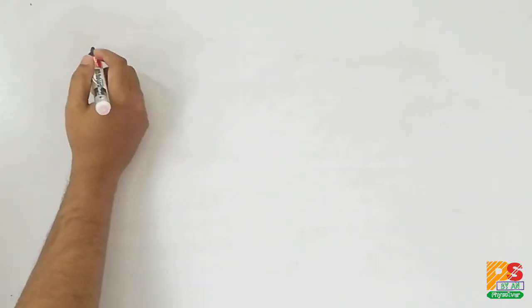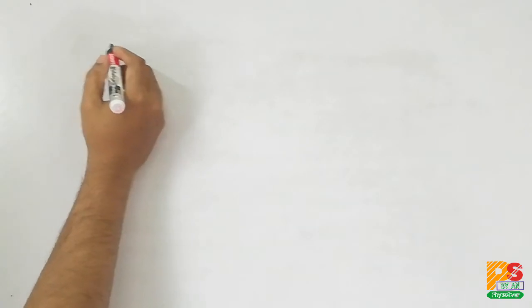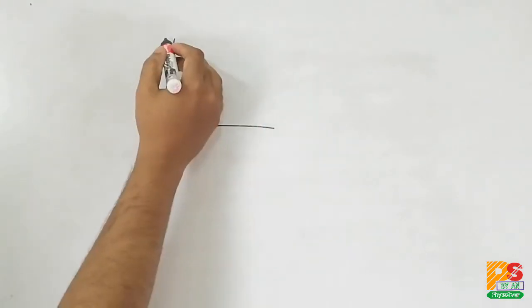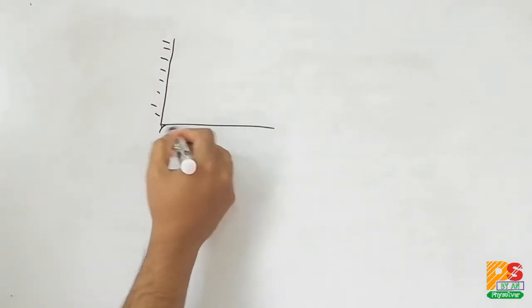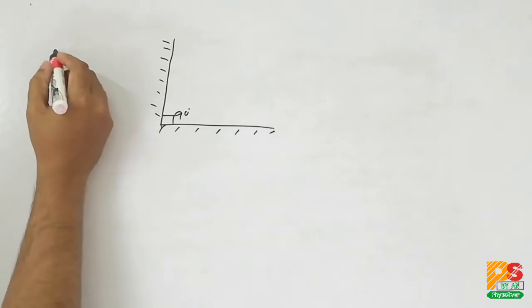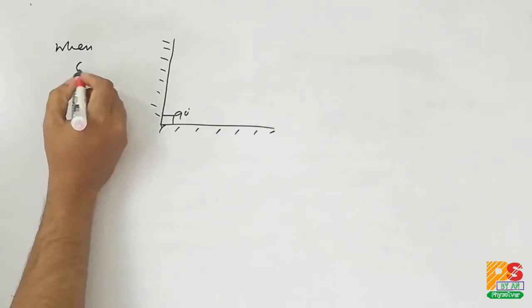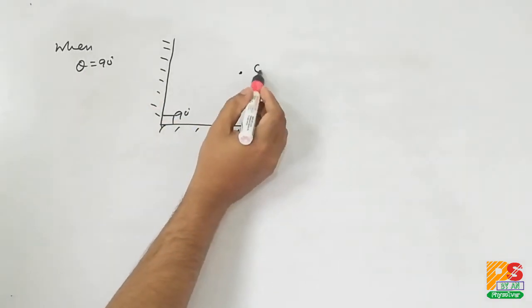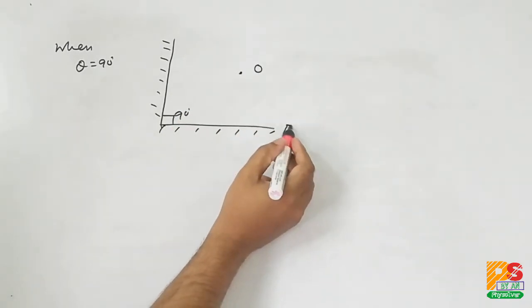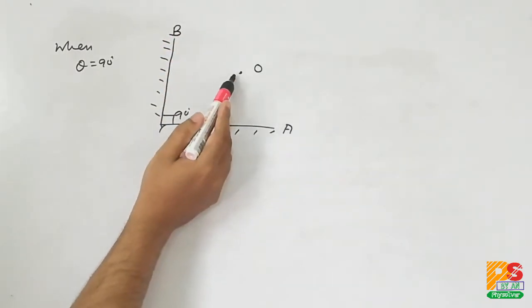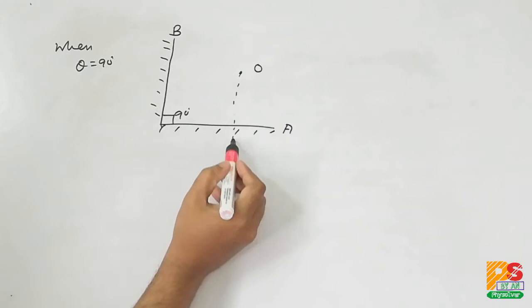First, understand what happens if two plane mirrors are placed perpendicular to each other. There is a formula to find the number of images: 360 degrees divided by 90, which is 4 minus 1, equals 3.